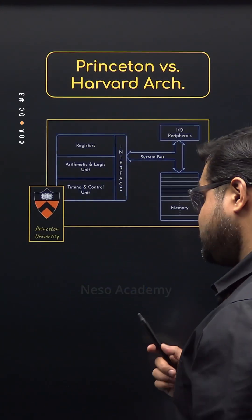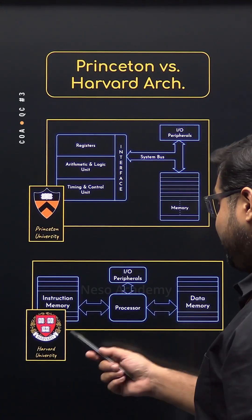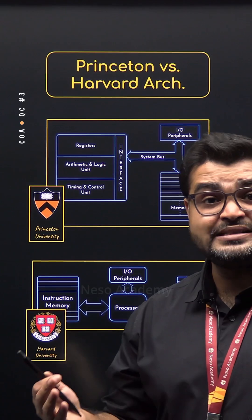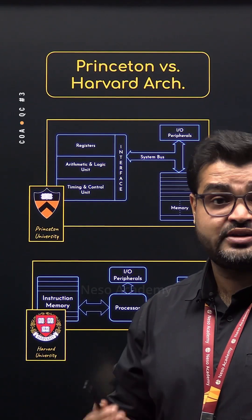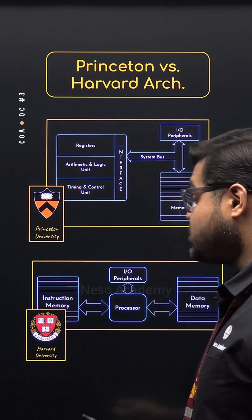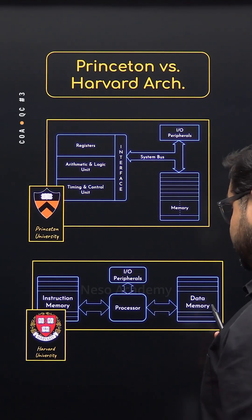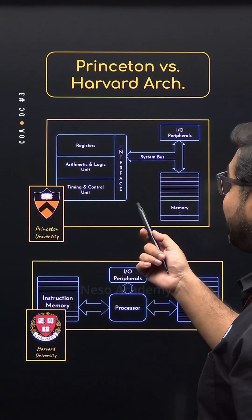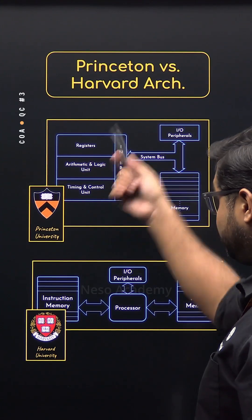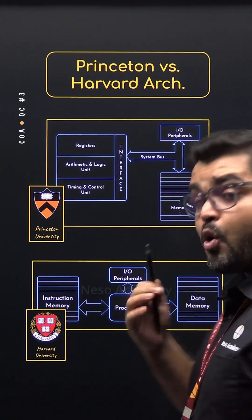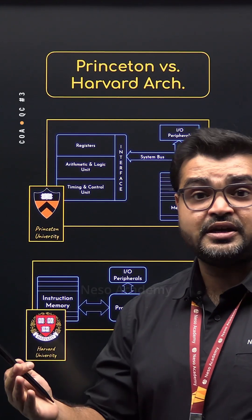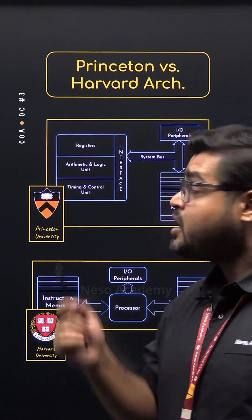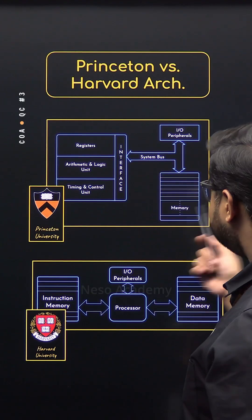Now there is a catch. Harvard architecture is more expensive and complex to design because of its dual system. Princeton, on the other hand, is simpler and more cost effective, but it suffers from the von Neumann bottleneck.